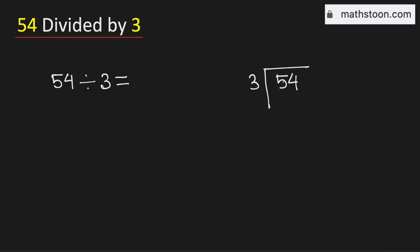Consider the first digit 5. We know that 3 times 1 is 3. If we subtract, we get 2. Now 2 is less than 3, that is why we need to bring down this number 4 here.